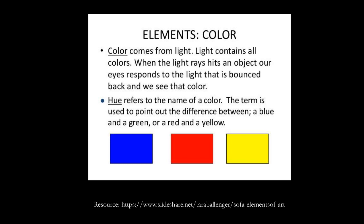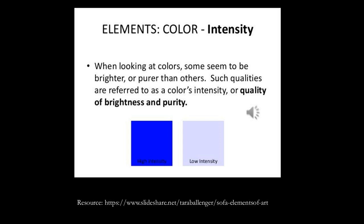When we think about color, we can start to break it down. Some colors seem to be brighter or purer than others — these qualities are referred to as a color's intensity, or quality of brightness and purity. Look at the differences of blue: here's bright, intense blue. Then we've got low intensity of blue — we're adding white to sort of get that intensity down.